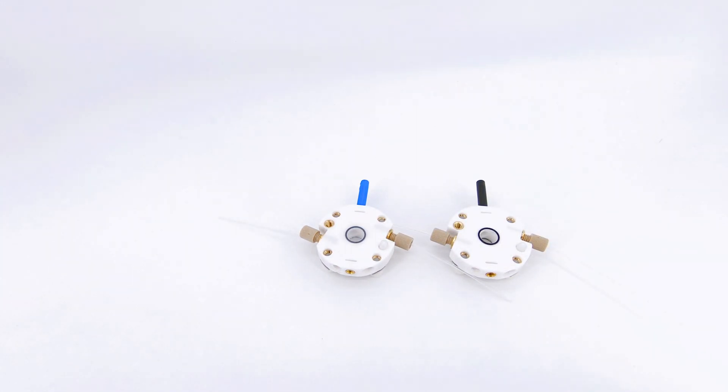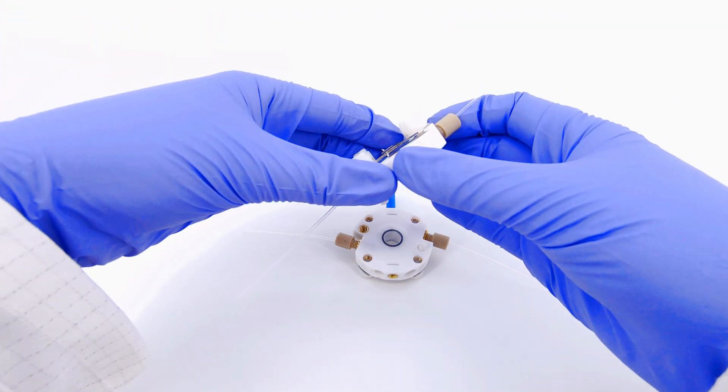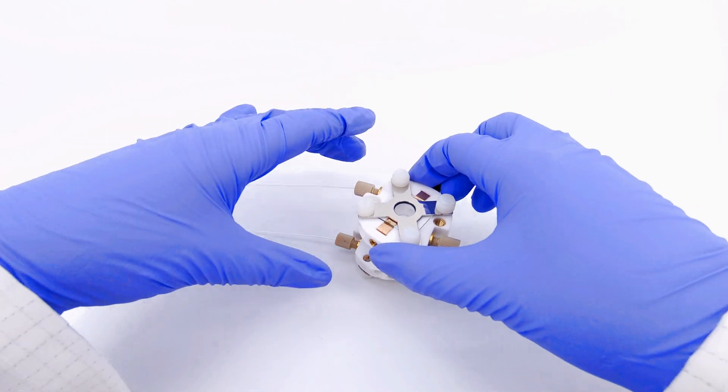Place a membrane onto one of the halves of the flow cell and then place the other half on top of that, such that the membrane is between the two o-rings.